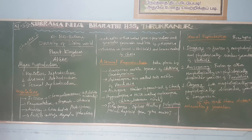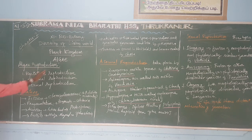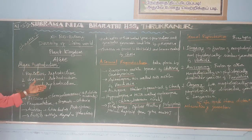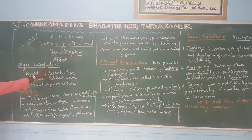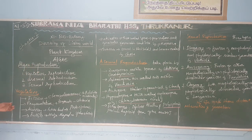Generally, in algae, there are three types of reproduction. Number one: vegetative reproduction. Number two: asexual reproduction. Number three: sexual reproduction. These are the three types of reproduction in algae, and we are going to discuss them one by one.